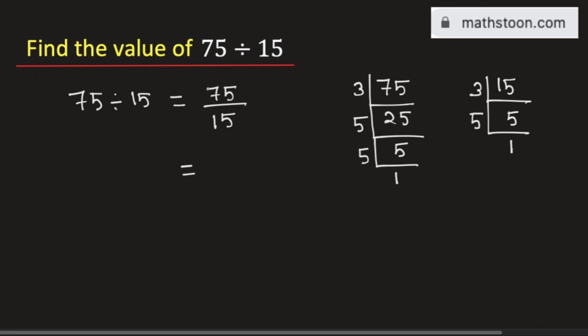Therefore, we can write 75 as the product of these numbers. That is, 75 equals 3 times 5 times 5. In the denominator, 15 can be written as the product of 3 and 5. So in the denominator, we have 3 times 5.